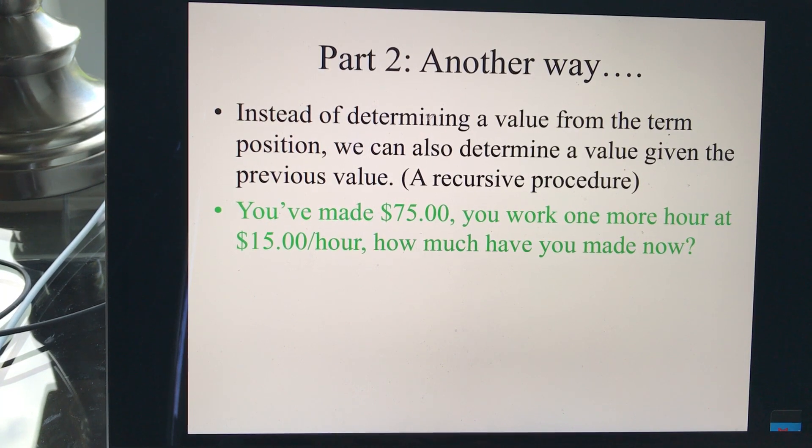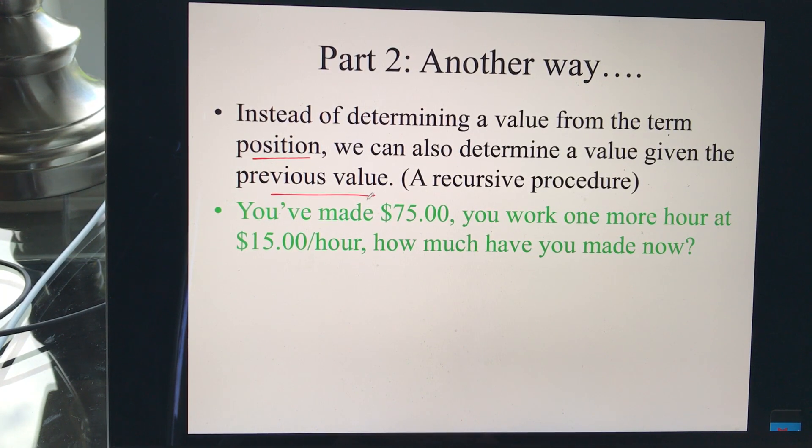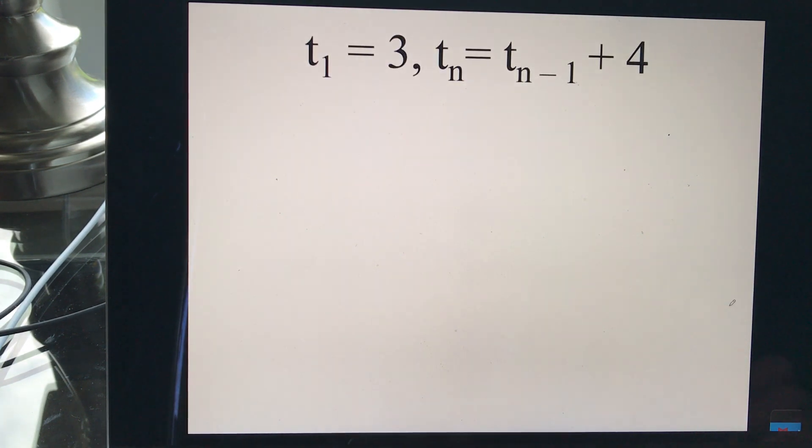Now, another way to look at this is instead of determining the value from the term position, which works, sometimes we can also determine the value given the previous value. So, for example, suppose you've made $75 at work, and you work one more hour at $15 per hour. How much do you make? Well, I don't have to go all the way back down to zero and do all my calculations again. I can say, I'm already at $75. I work one more hour, so I just add the next hour on. That works sometimes, too.